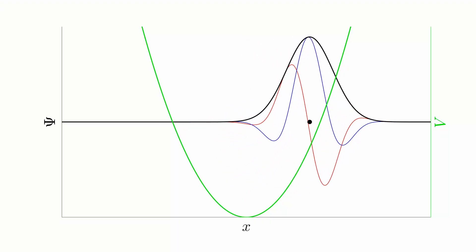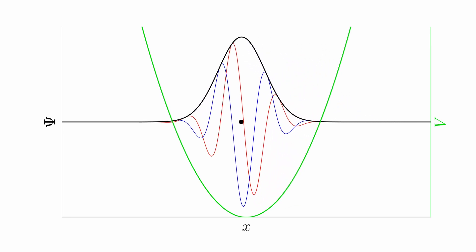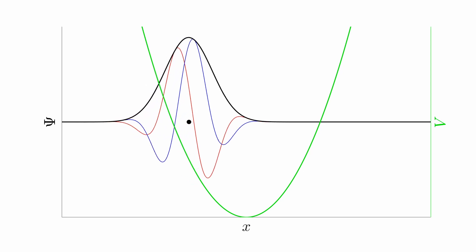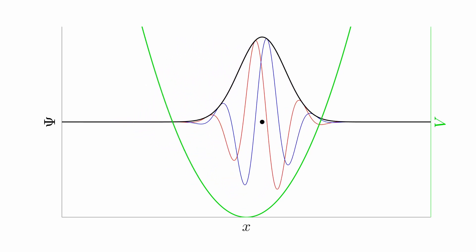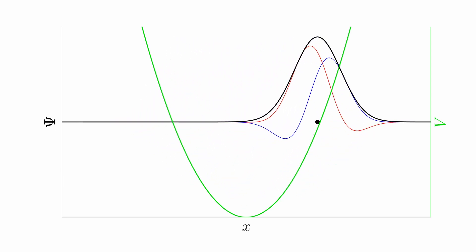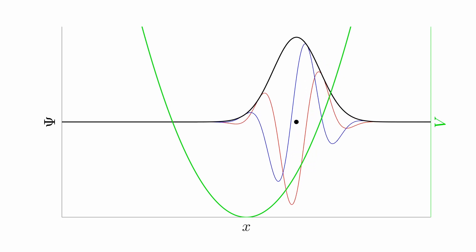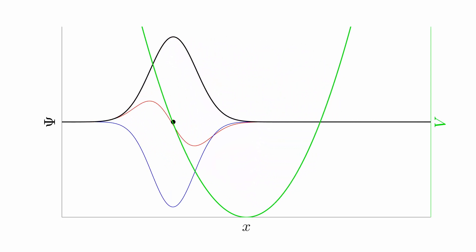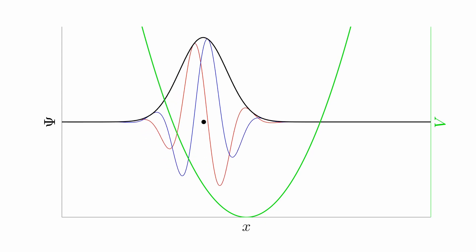Now let's have a look at the more wave-like wave packet. Here we can see a much greater penetration of the wave packet into the classically forbidden region. This is clearly a quantum harmonic oscillator.